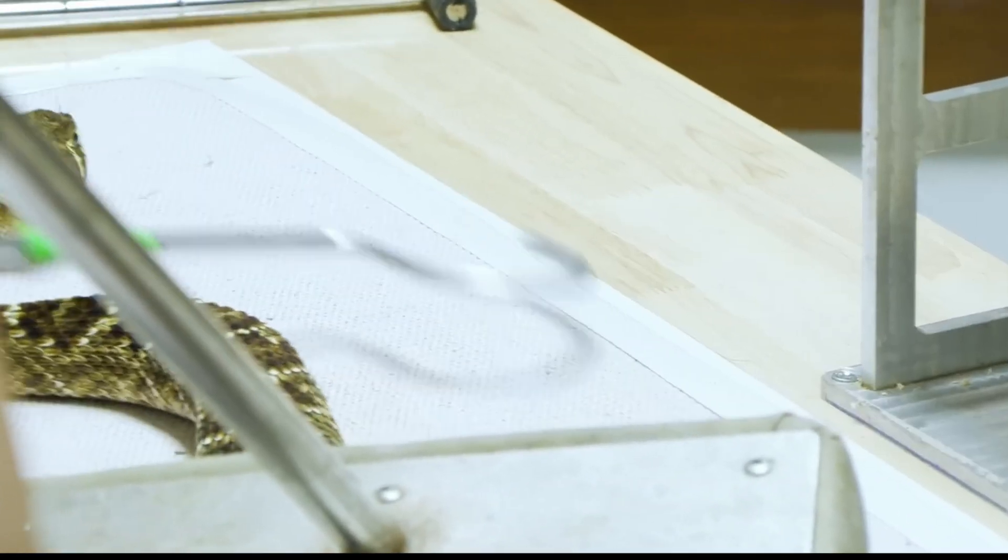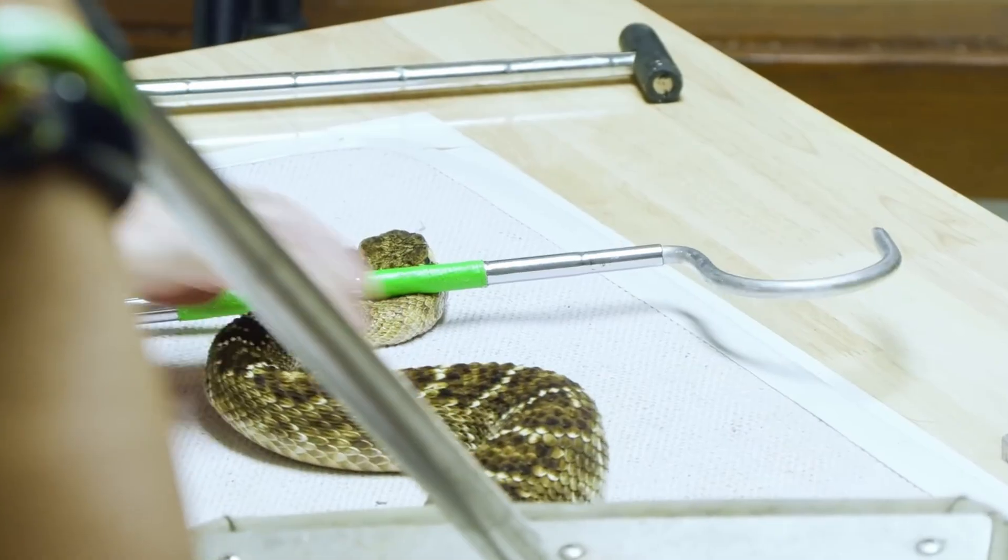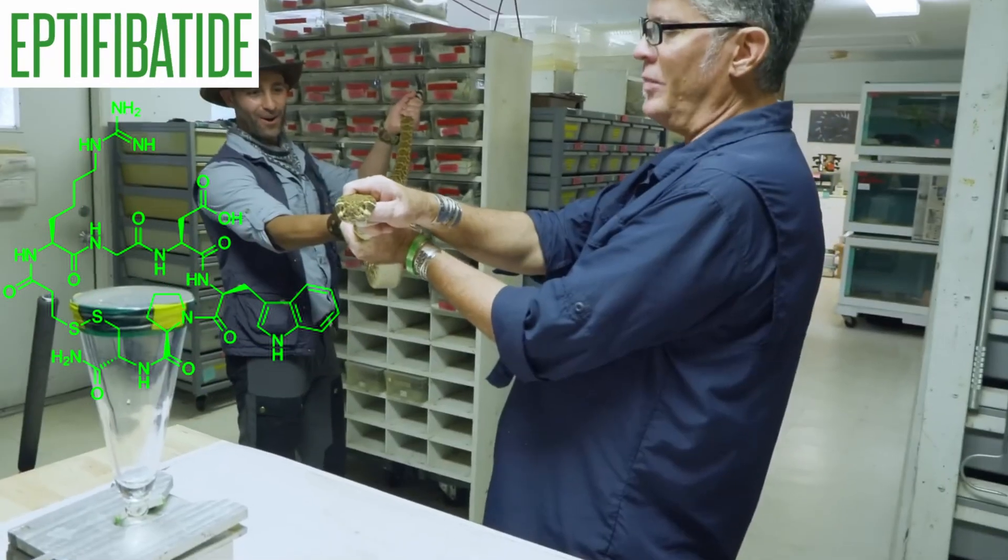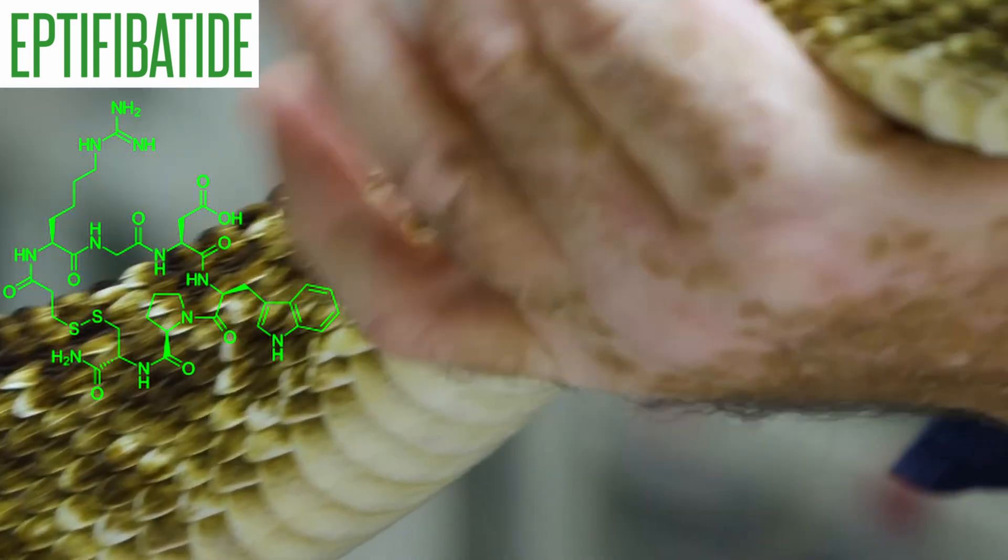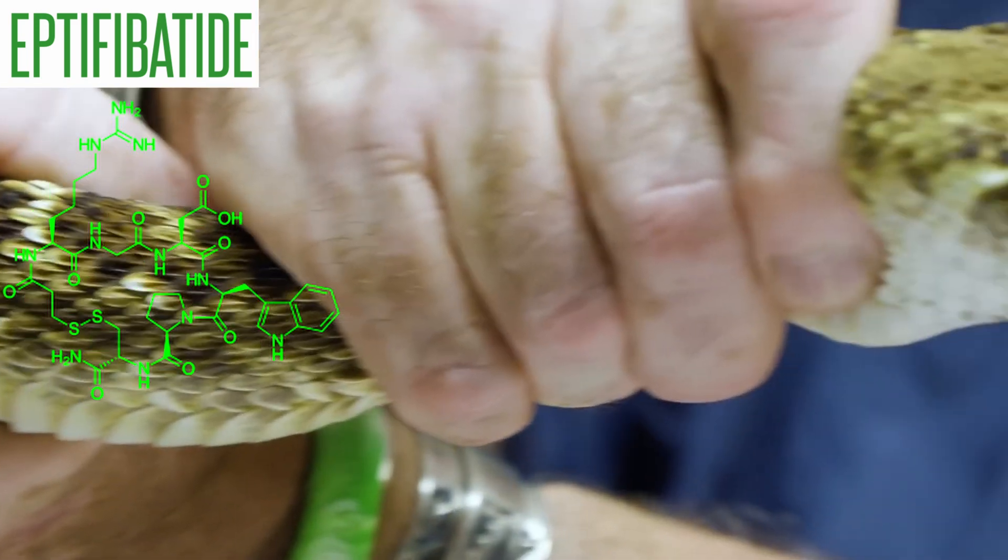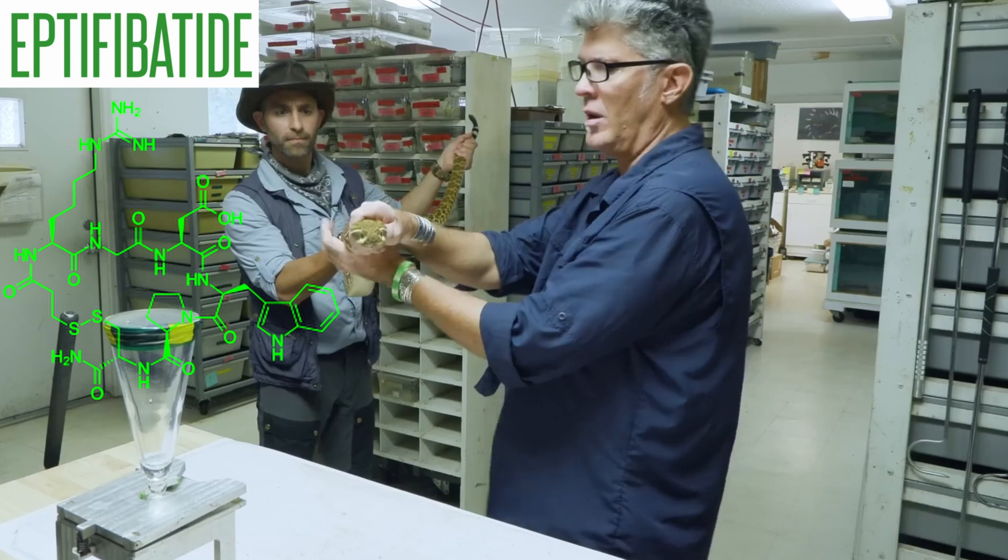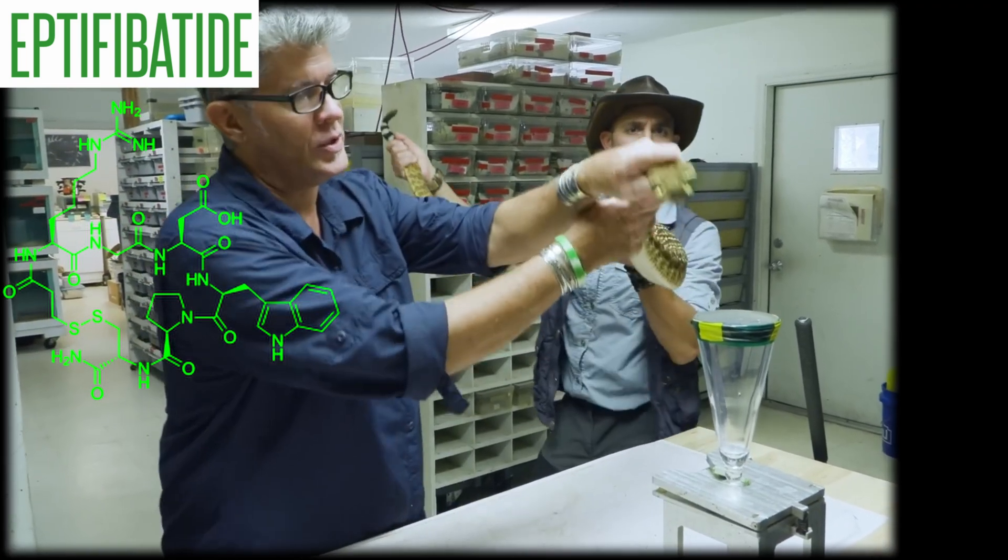Barber's pygmy rattlesnake. This snake's venom contains the substance eptifibitide. It is used in the treatment of heart attack. It prevents blood clotting by preventing platelets from sticking to each other.